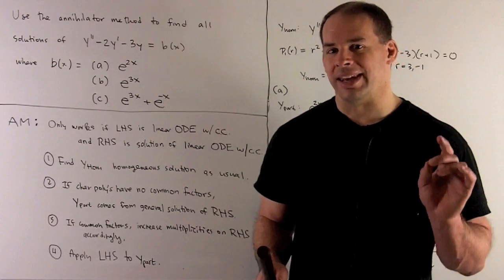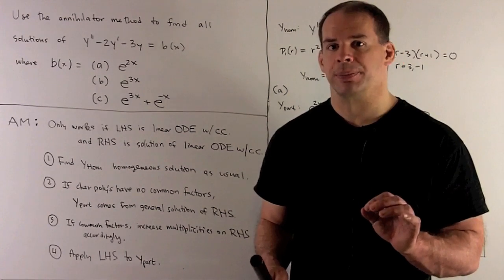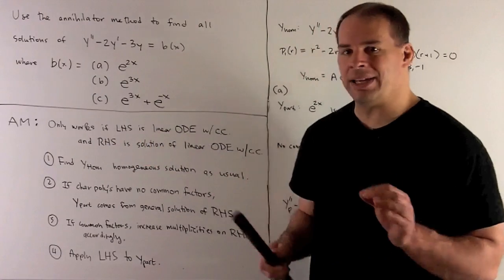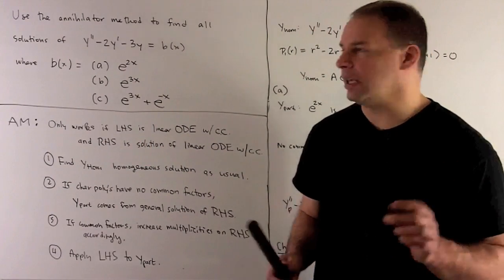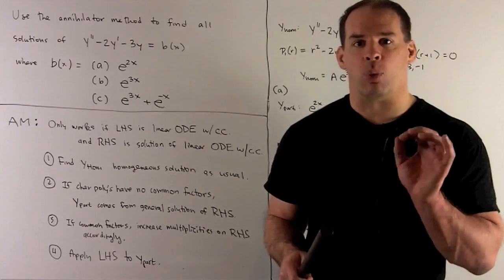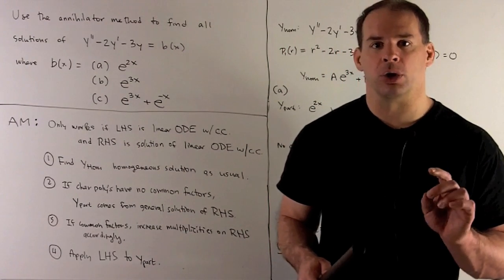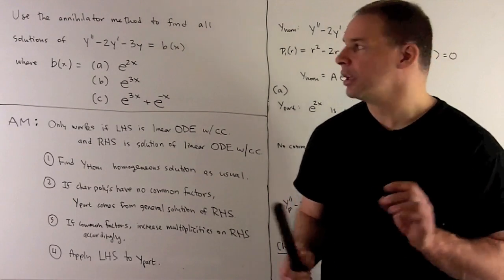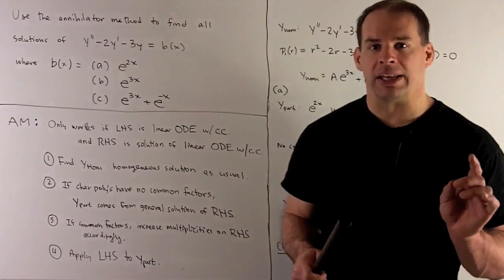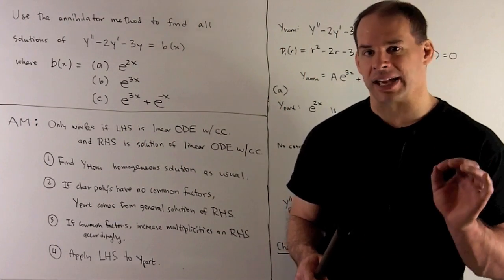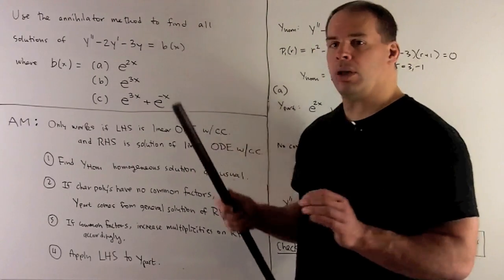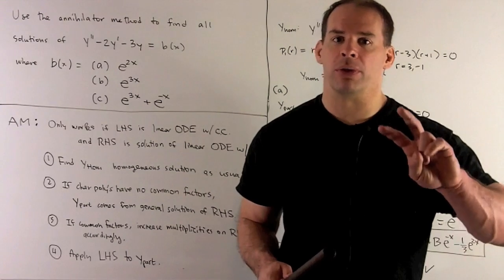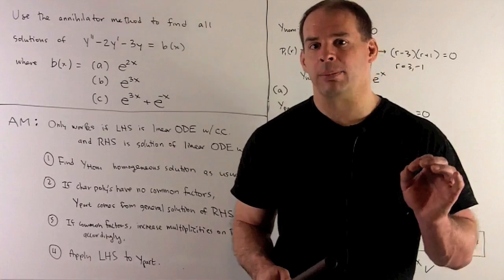The only catch: the annihilator method only works in special cases. We need two conditions. First, with b(x) = 0, we want a linear ODE with constant coefficients — only derivatives of y, no squaring or cubing, and only numbers (no functions of x) as coefficients. Second, b(x) itself must be the solution of a linear ODE with constant coefficients. If we have both conditions, we can use the annihilator method.